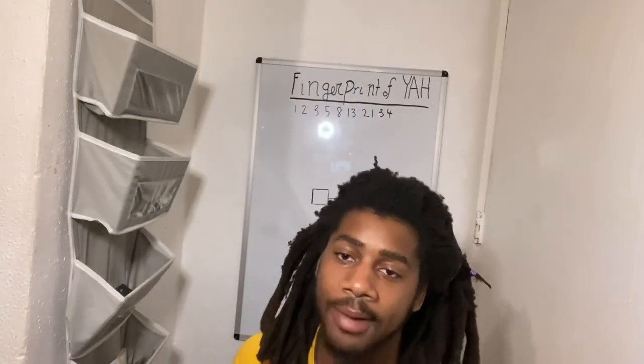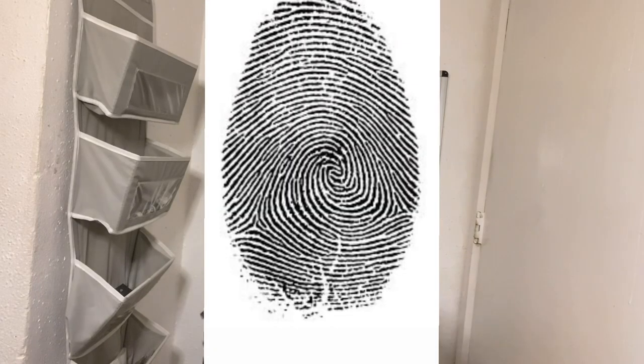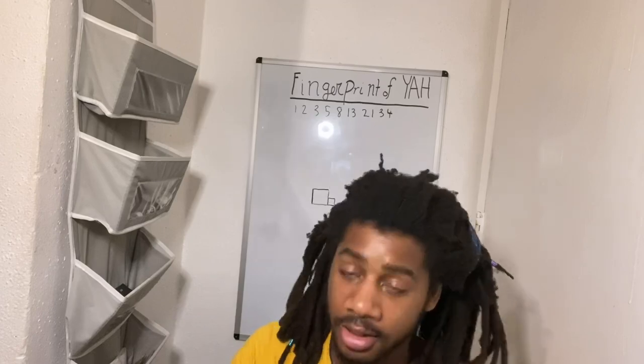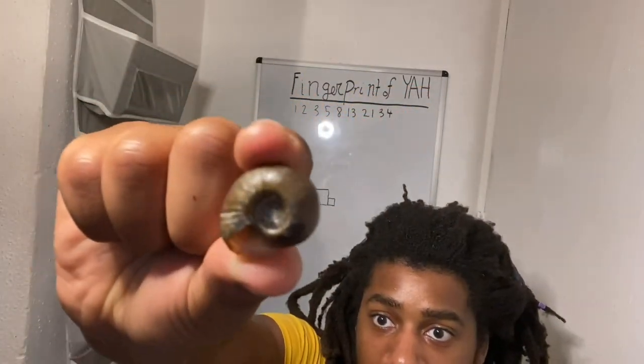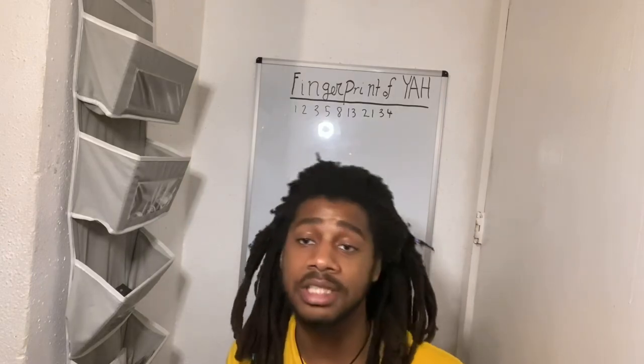Peace and blessings family. In this video we're going to be talking about something very important called the fingerprint of Yah. This is the mathematical sequence that Yah used to create everything in the universe — everything composed of atoms, everything composed of energy, basically living and non-living things. He uses math to make it. This is what you call the Fibonacci sequence, or what I like to call the fingerprint of Yah. If you look at your fingerprint, you're going to see this same exact mathematical sequence. A shell also contains this same mathematical sequence.